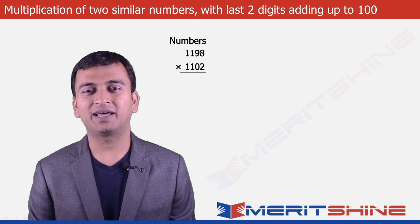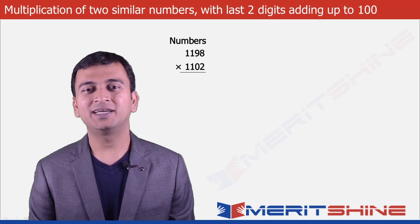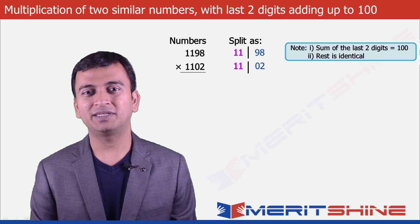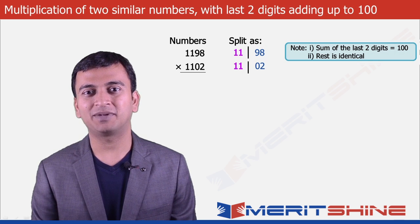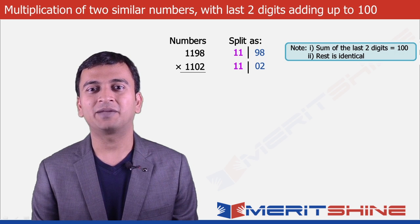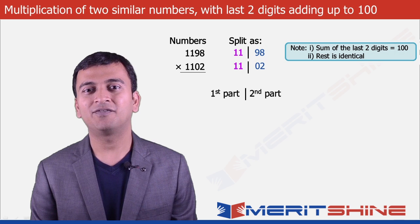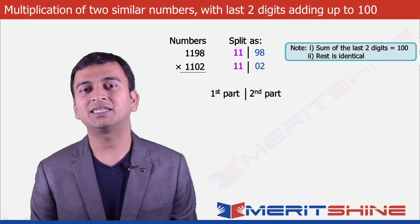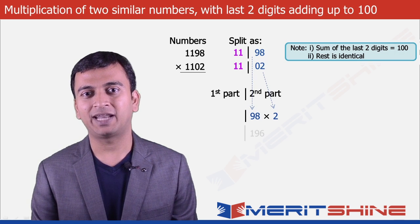Let us try to multiply 1198 and 1102. Please note that the last two digits taken from both numbers are 98 and 02 respectively, and their sum is 100. The rest is identical, which is 11. Now we can proceed to write down our answer in two parts. For the second part, it would be the product of the last two digits, which is 98 × 2 = 196.